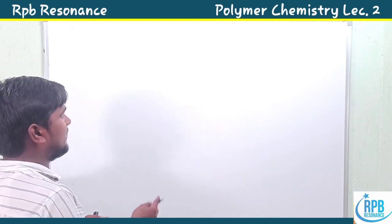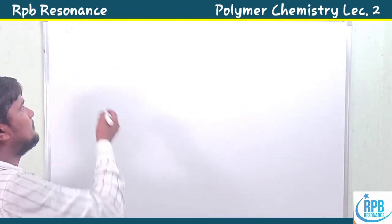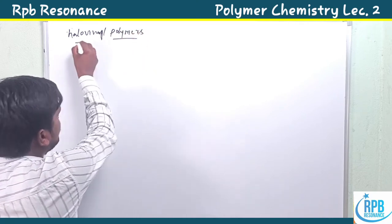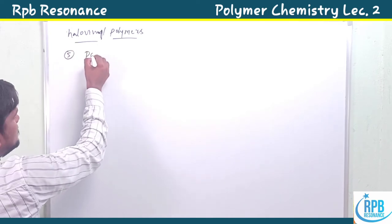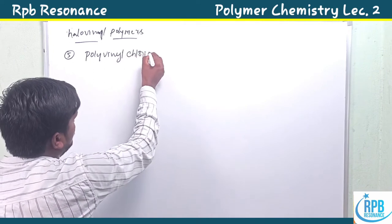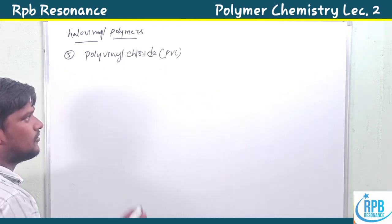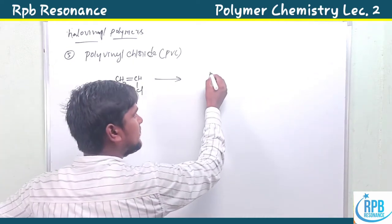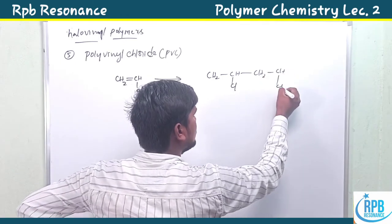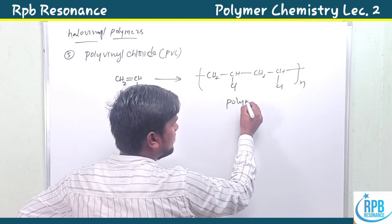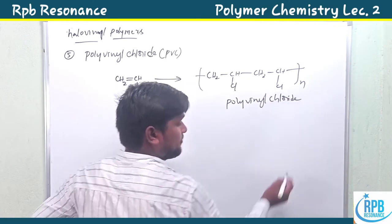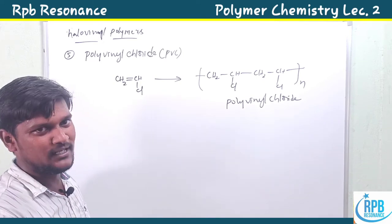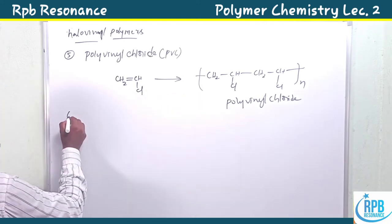Now we discuss halo vinyl polymers. The first halo vinyl polymer is polyvinyl chloride (PVC). The monomer CH₂=CHCl undergoes polymerization to produce the repeating unit –(CH₂–CHCl)–. PVC is used to manufacture raincoats and handbags. It is an example of a vinyl polymer derivative.